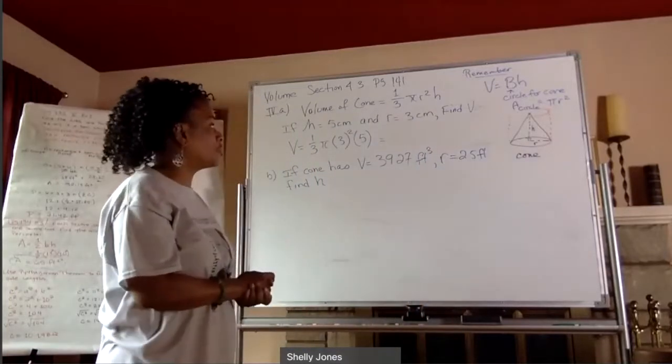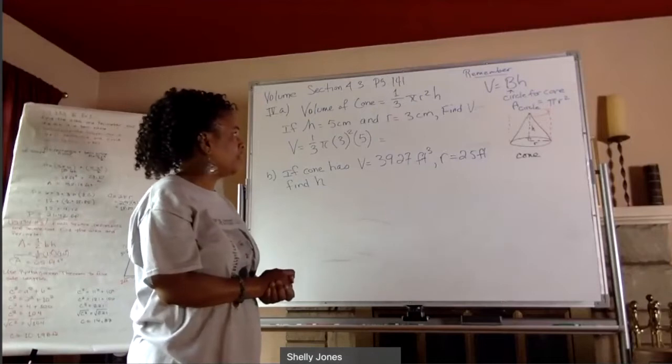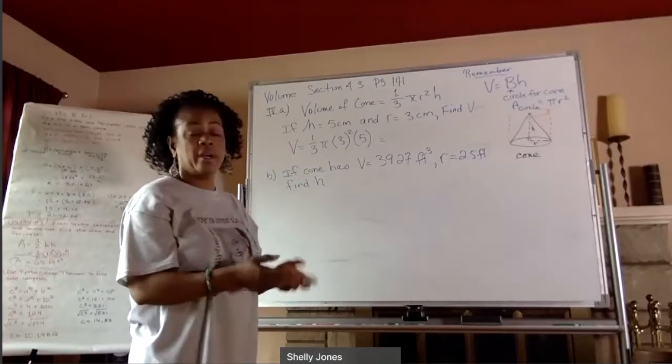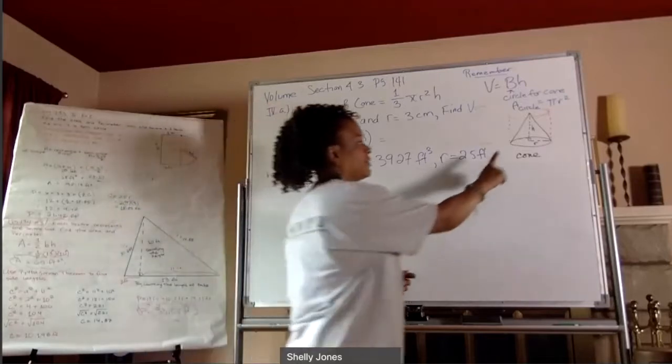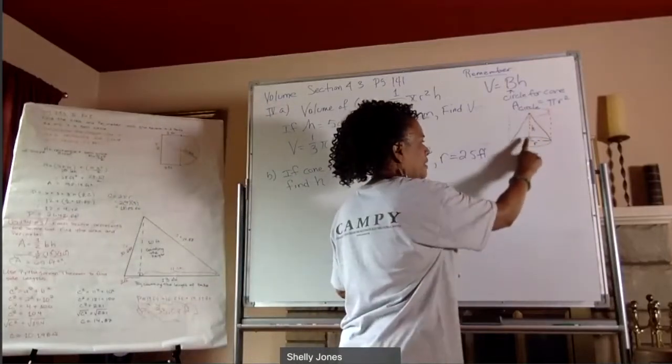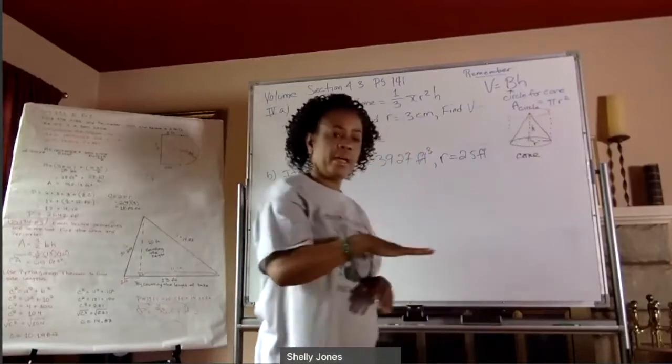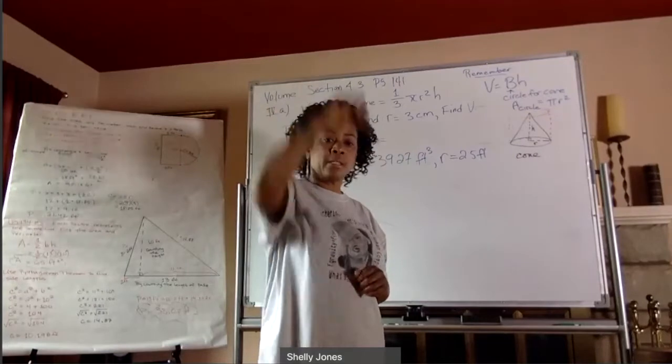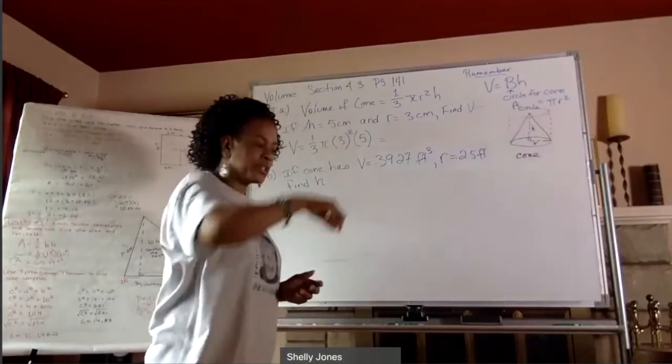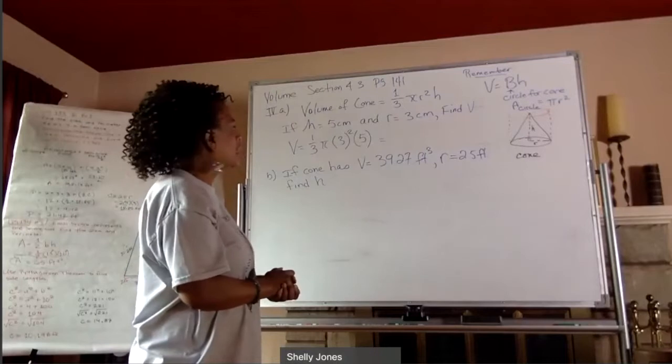So the volume of a cone is one third times pi r squared, which is the area of that circular base times the height of the cone. And the height of the cone is a perpendicular line from the base of the cone up through the apex. So think about maybe dropping a string down to the base.